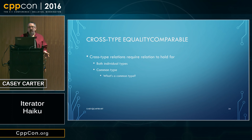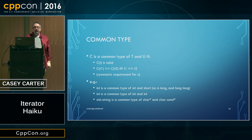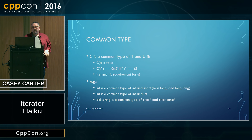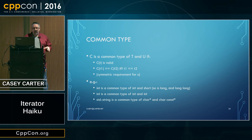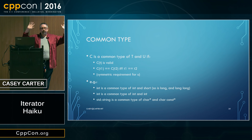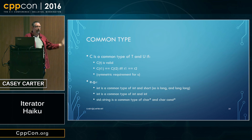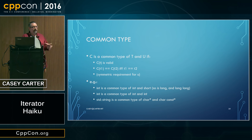The Palo Alto report has an answer for what it means to compare two things with different types — the cross-type equality comparable concept. Cross-type relations require the same relation to be valid for each of the types individually and for their common type. C is a common type of T and U if I can convert a T to C, and that conversion preserves the identity of values. An example: int is a common type of int and short, long is also a common type of int and short, and int is trivially a common type of int and int.